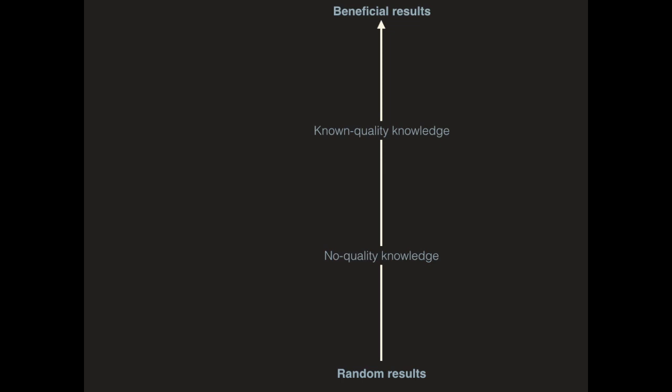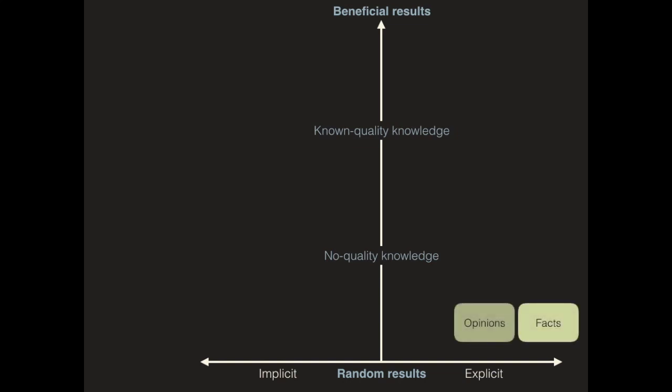It is useful to separate implicit and explicit knowledge. Explicit knowledge is knowledge as we typically think of. It is knowledge that can be made explicit as words, graphs, or narratives. Facts, opinions, and norms are typical examples.